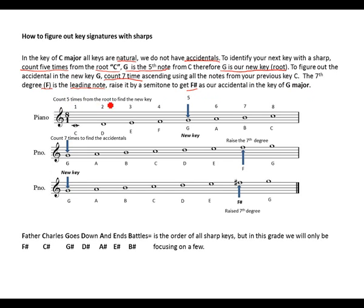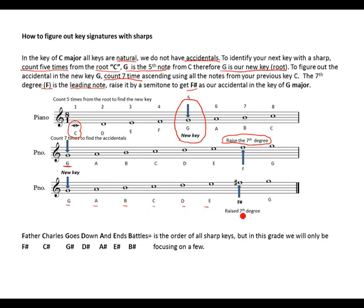Let's look at that on the staff. Count five times from the root C: one, two, three, four, five — we find G. We make G our new key. From G, carry all the notes but start counting from G. Count seven times to find the accidental: one, two, three, four, five, six, seven. The seventh is our leading note — raise it by a semitone. We get F sharp. The complete G major scale is G, A, B, C, D, E, F sharp — the raised seventh degree — then back to G, which lies a semitone above F sharp.